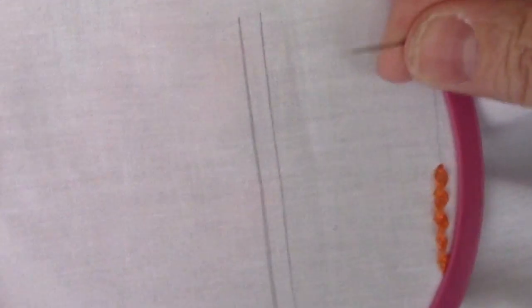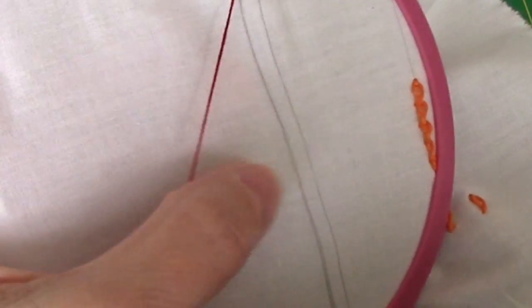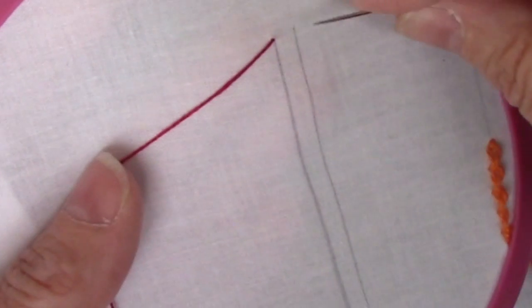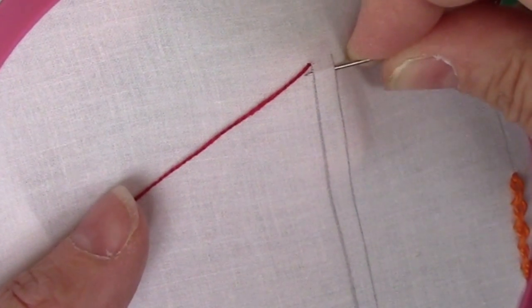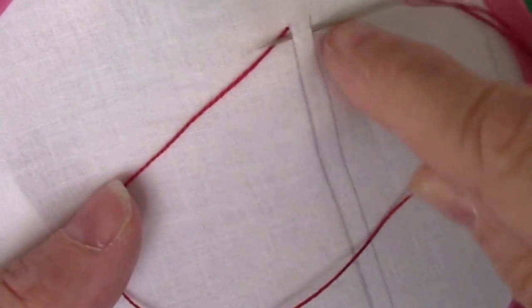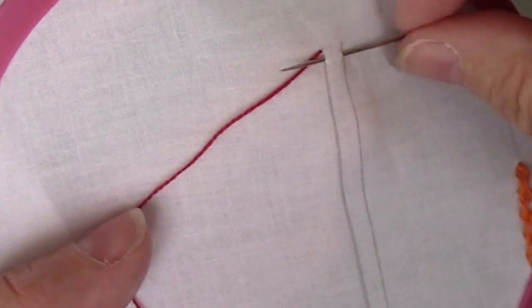If you're working it just on a flat surface, you'd basically be working between two lines, whether they're real or imaginary. We're going to come up on where we want our solid line to be, on that line. We are going to go back down in the other line and come back up. You want to come up perpendicular from where you went down and pull through.